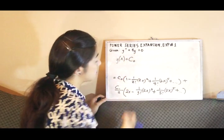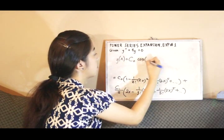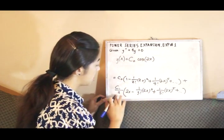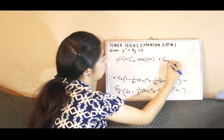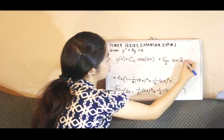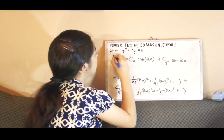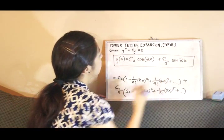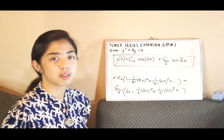We can therefore write the final answer as y equals c sub zero times cosine of 2x plus c sub 1 over 2 times sine of 2x. That is the answer for the problem y double prime plus 4y equals zero.